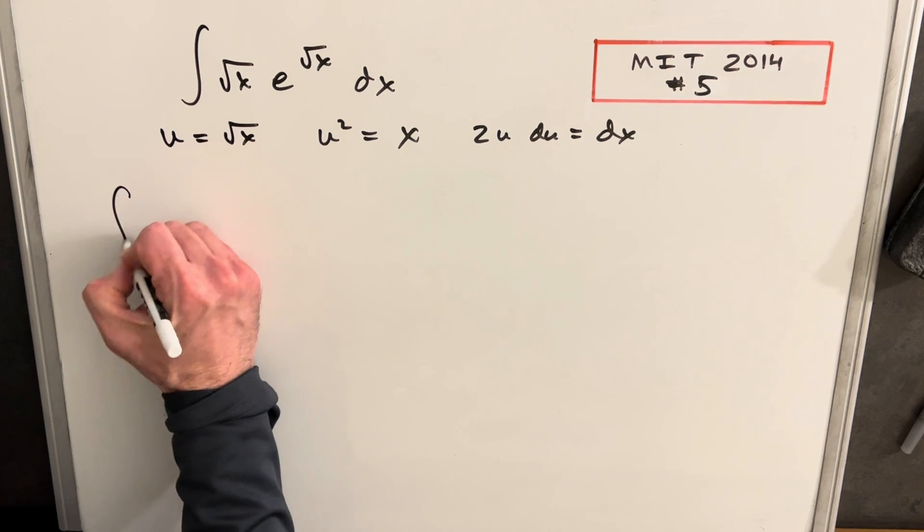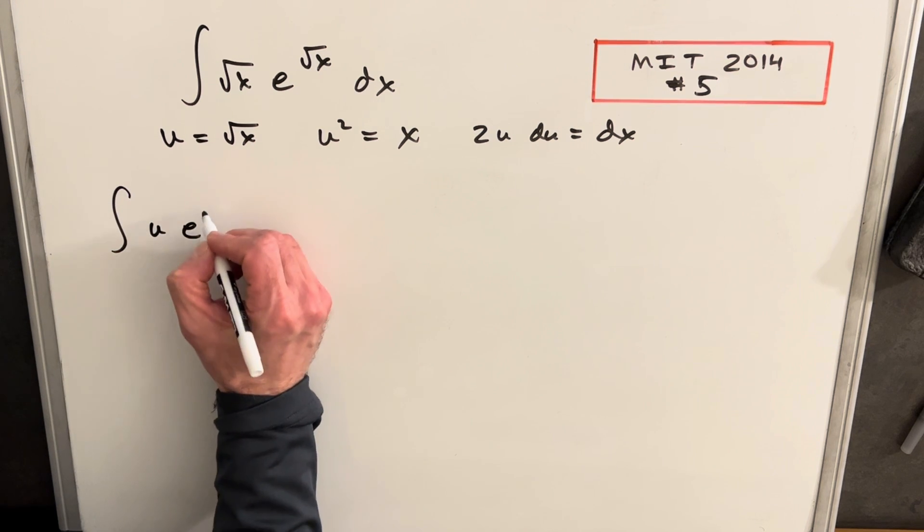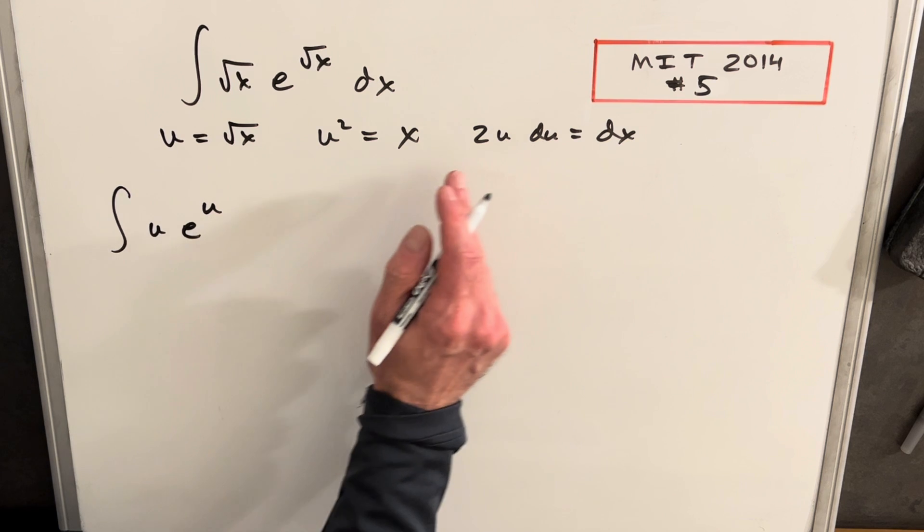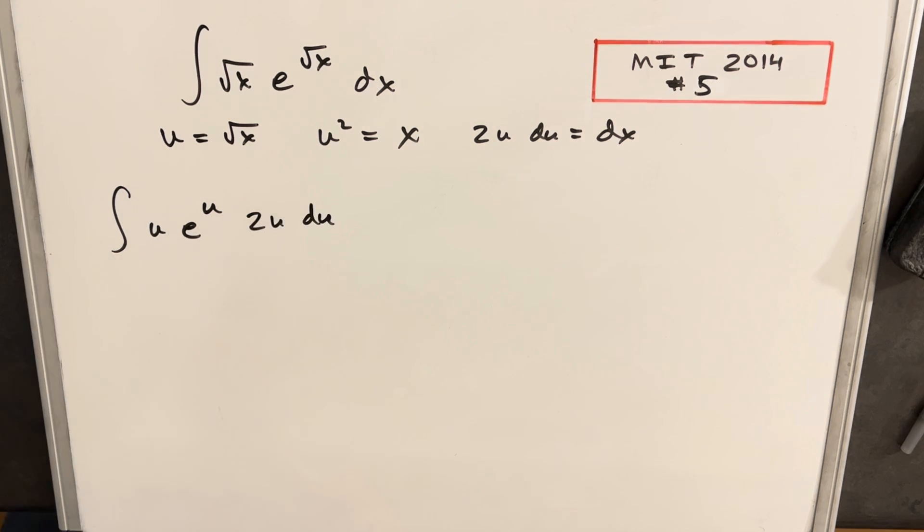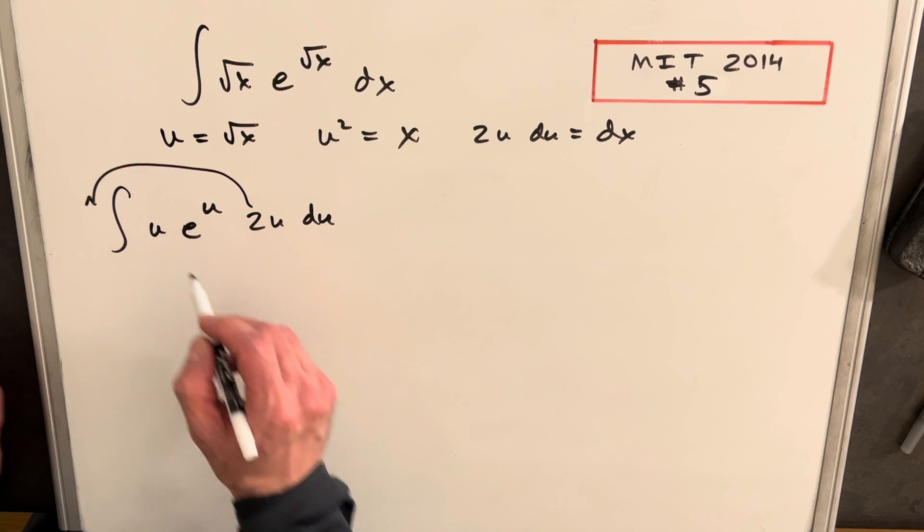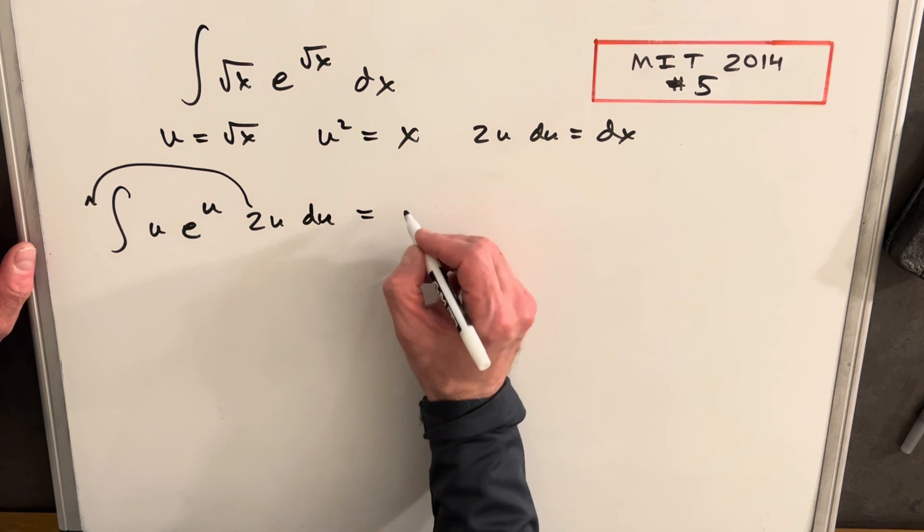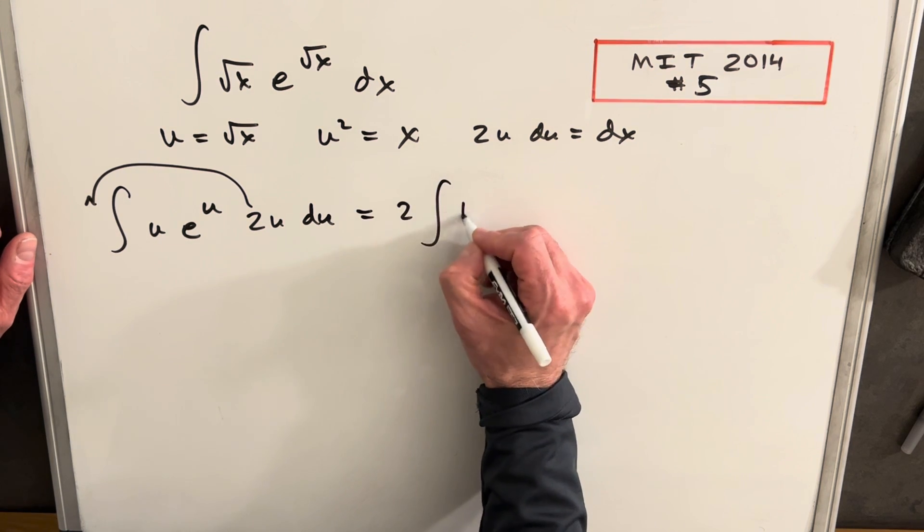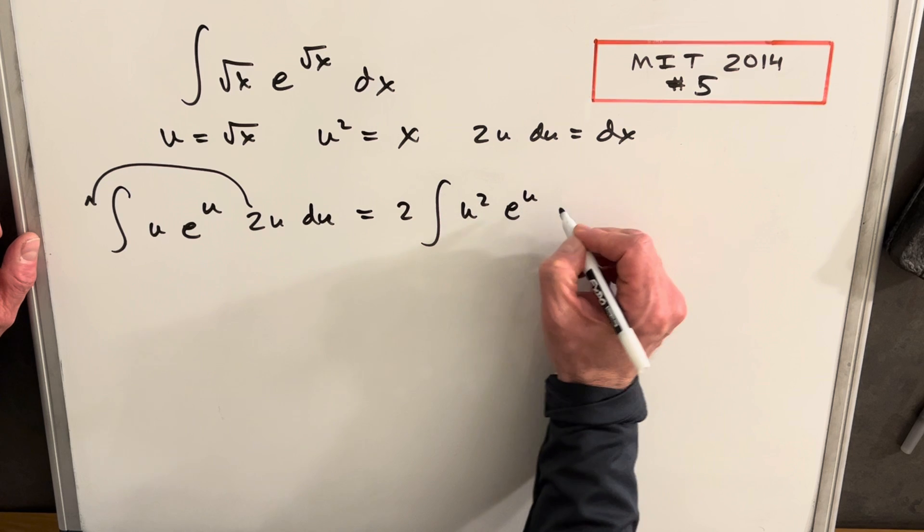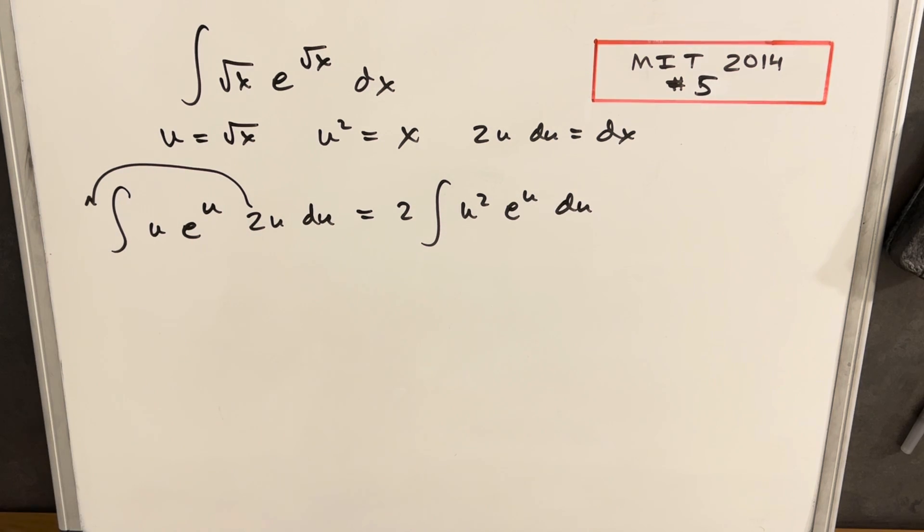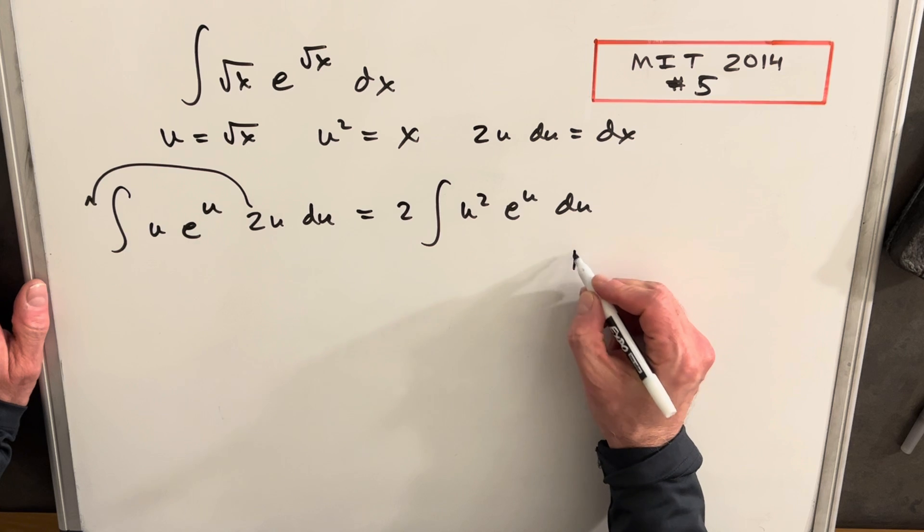Next, making that substitution, we're going to have just u e to the u. And then let's plug in our dx, which is going to be 2u. Then I can pull this two out front and multiply these two u. So let's see what we have. We'll have 2 u squared e u du. And this is perfectly set up for integration by parts. I'm going to use the DI method or tabular integration to repeatedly do integration by parts. Let's see how that's going to work.